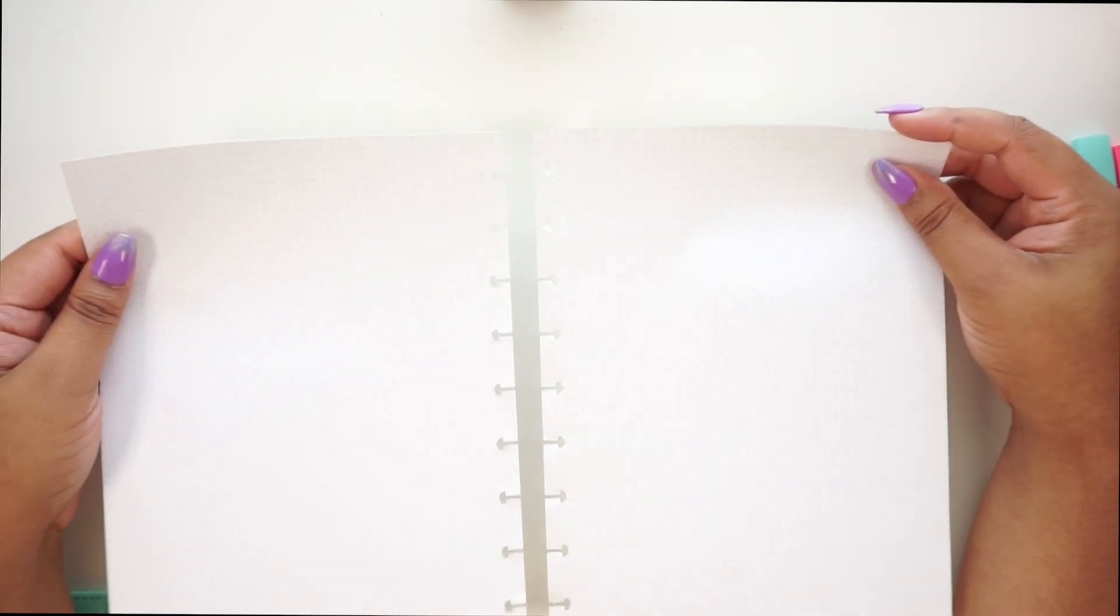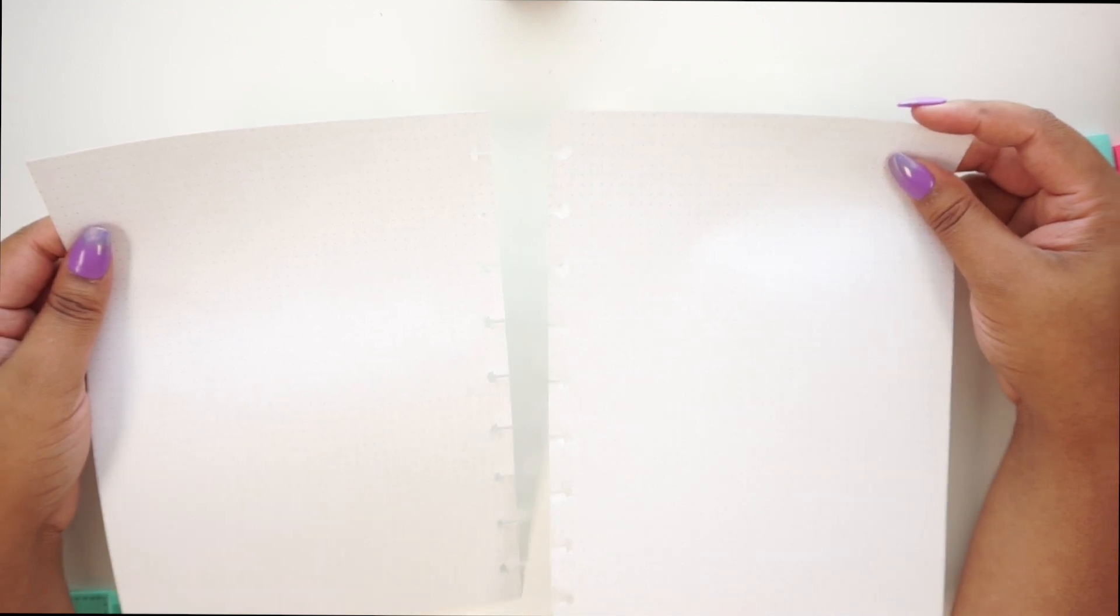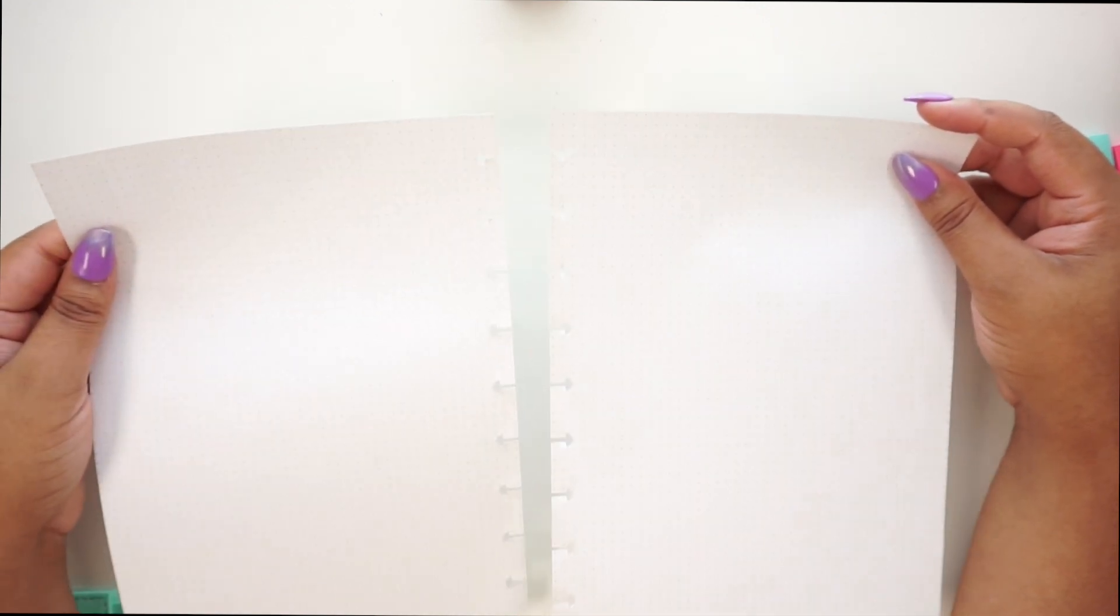I got my dot grid paper from the Happy Planner and I need some more because I feel like I'm going to be sticking with the bullet journaling spreads. I just like them. So yeah, I have some dot grid paper here.